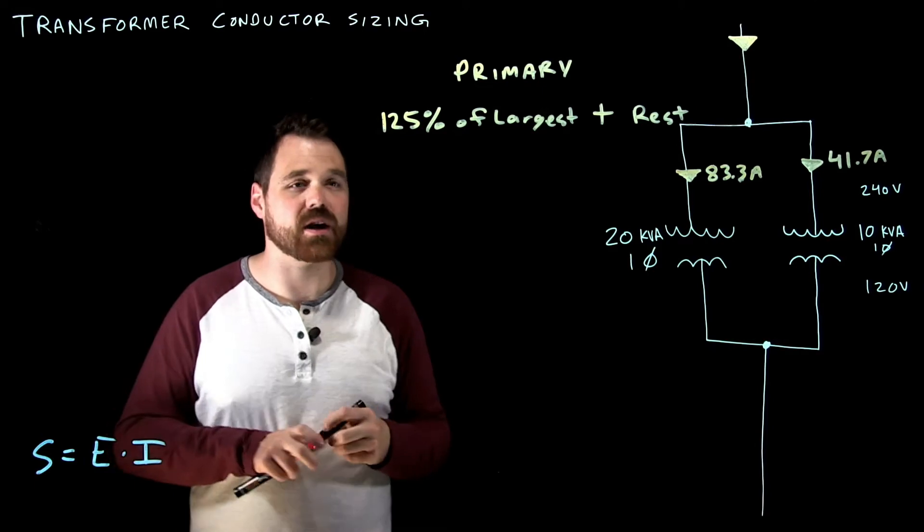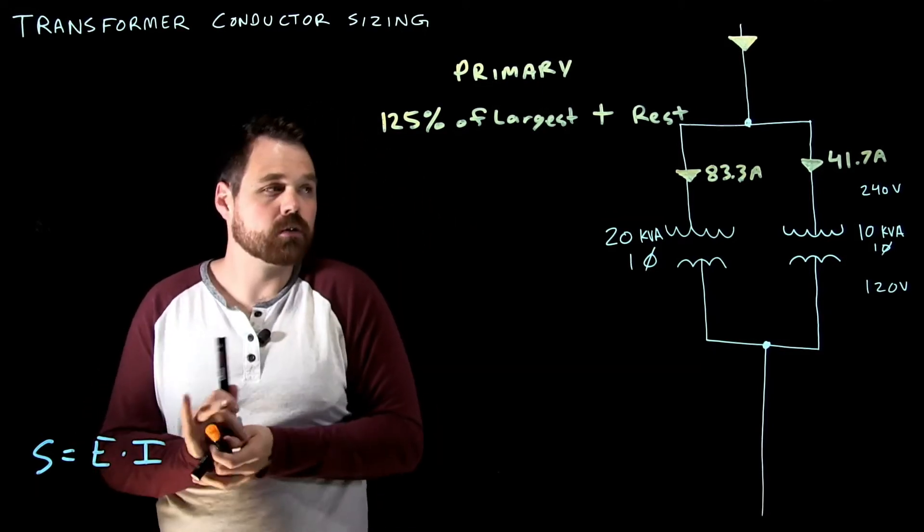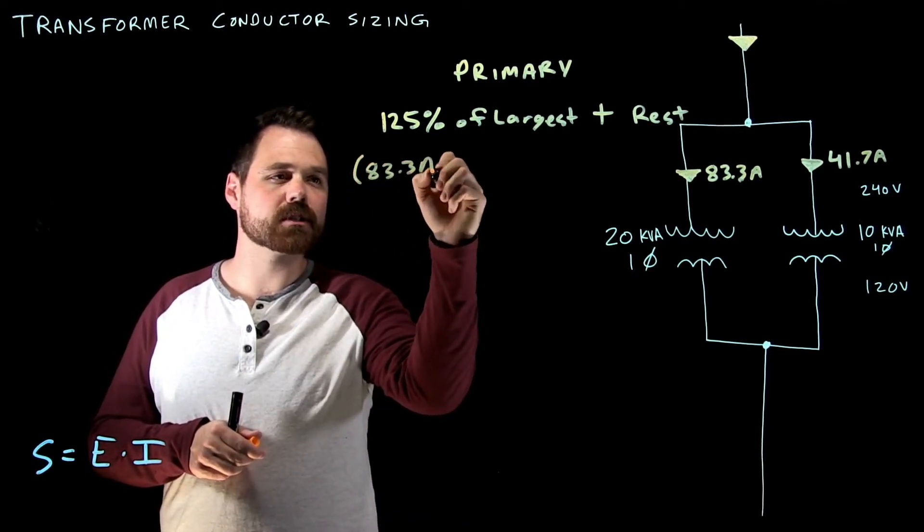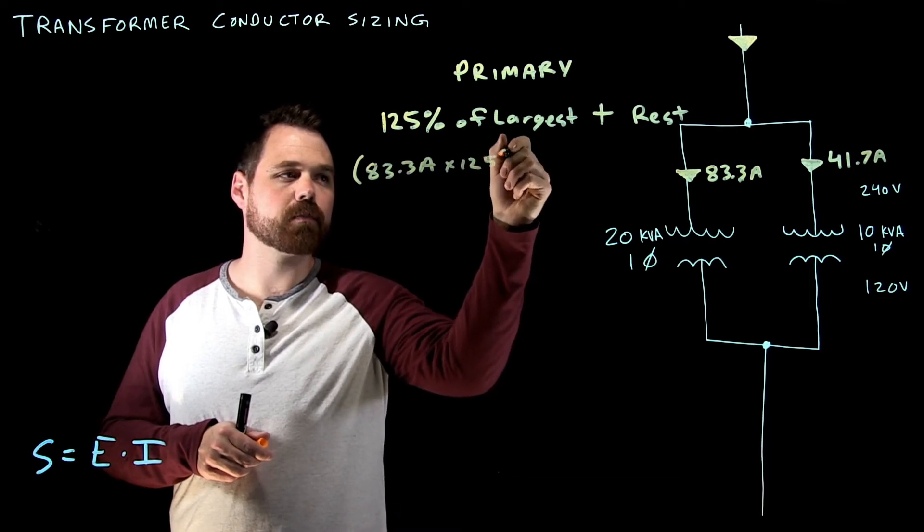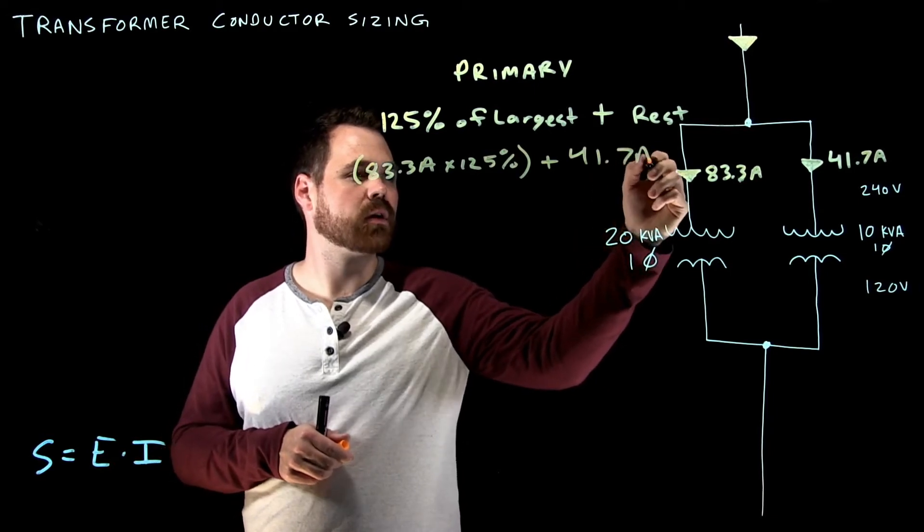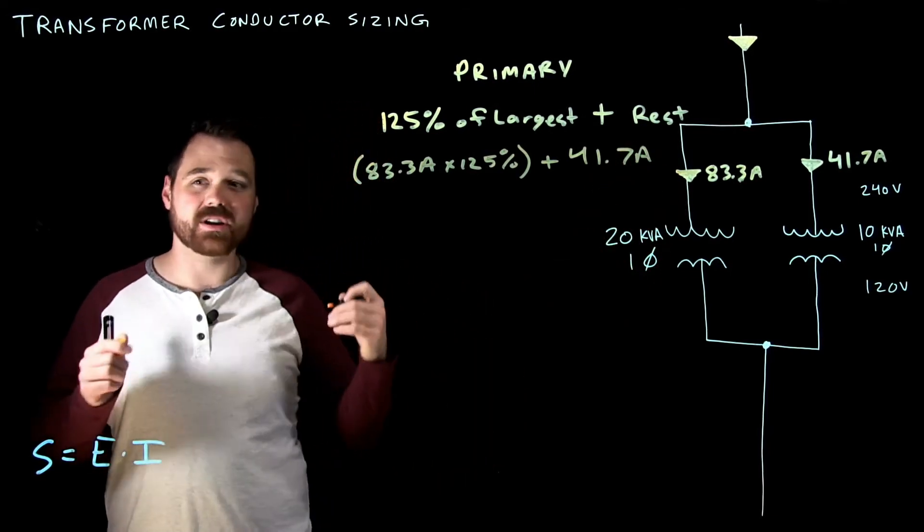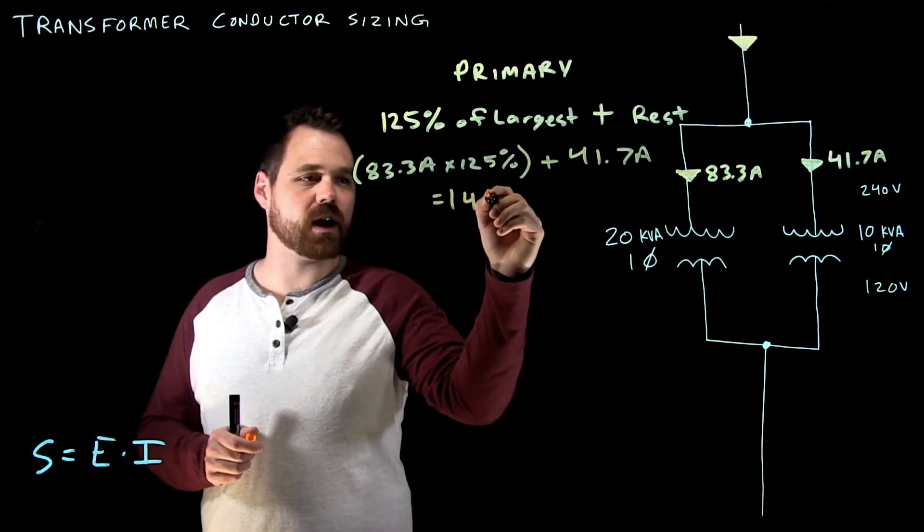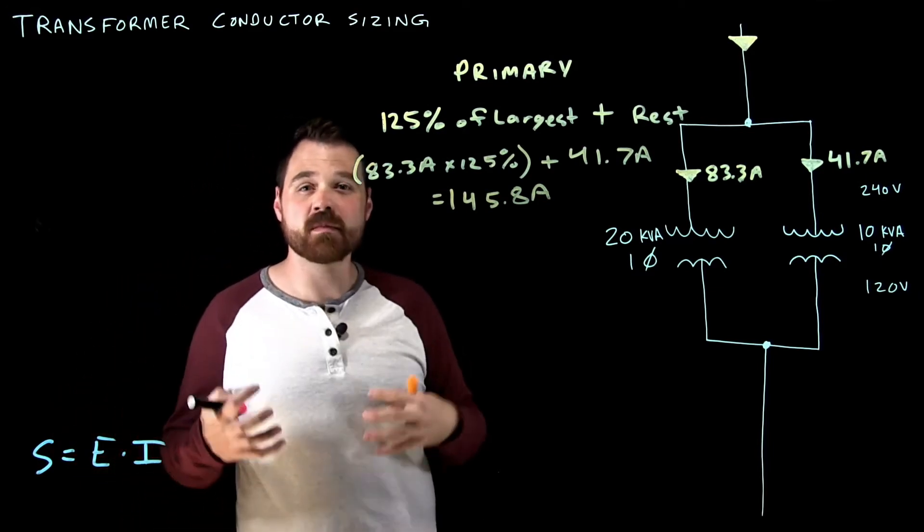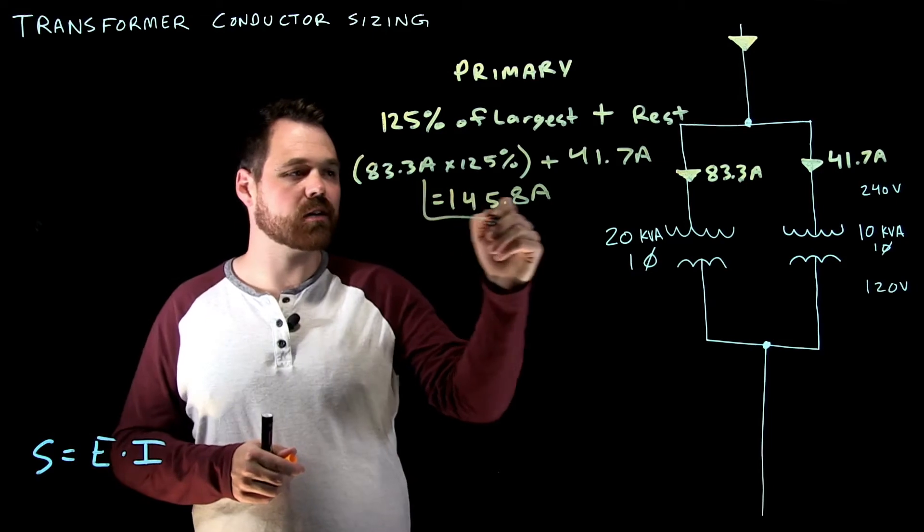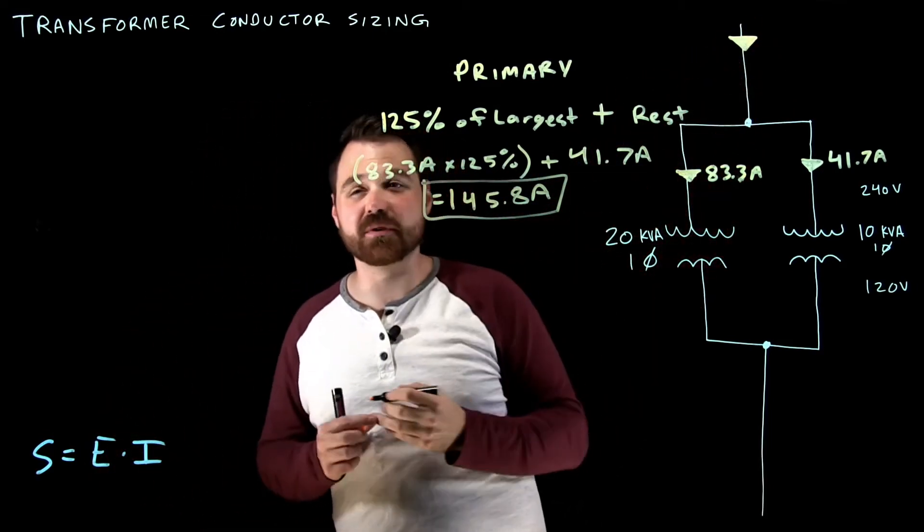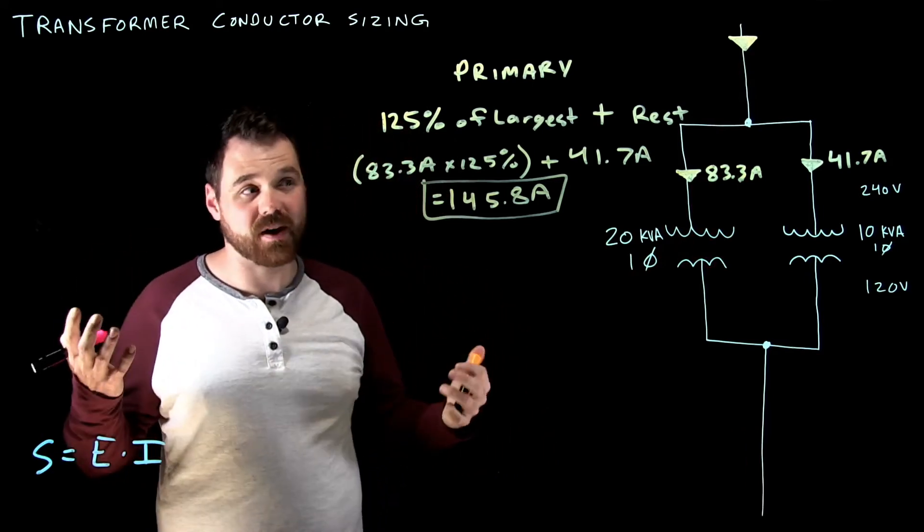Now in order to do this calculation, I'm going to go 83.3 amps times 125% plus 41.7 amps. That now is going to give me, I get 145.8 amps. That is the rating or the minimum required ampacity of my conductor up here. So when I'm sizing this conductor, it needs to be good for 145 amps, 145.8 amps.